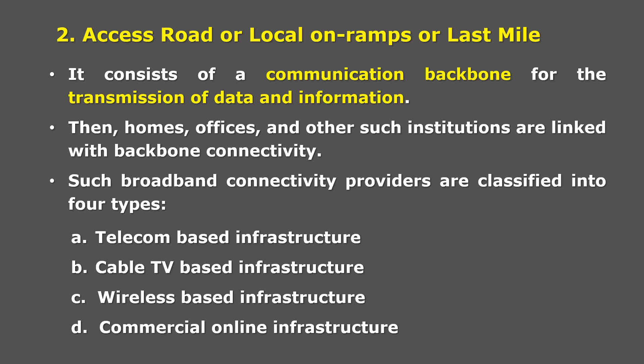Let us move on to the second major component — the access road, also known as local on-ramps or last mile. It consists of a communication backbone for the transmission of data and information. Homes, offices, or other institutions are linked with this backbone connectivity. In short, these are all the connectivity opportunities available at the doorstep of people — that is the communication backbone to which individuals, offices, or institutions get connected.